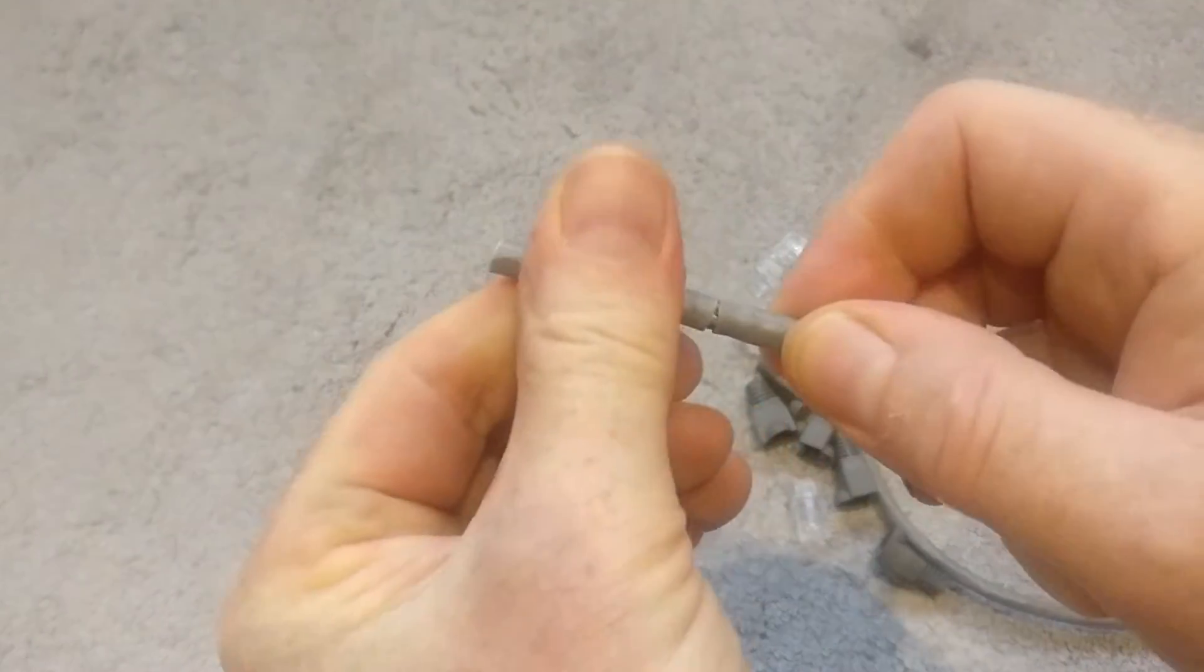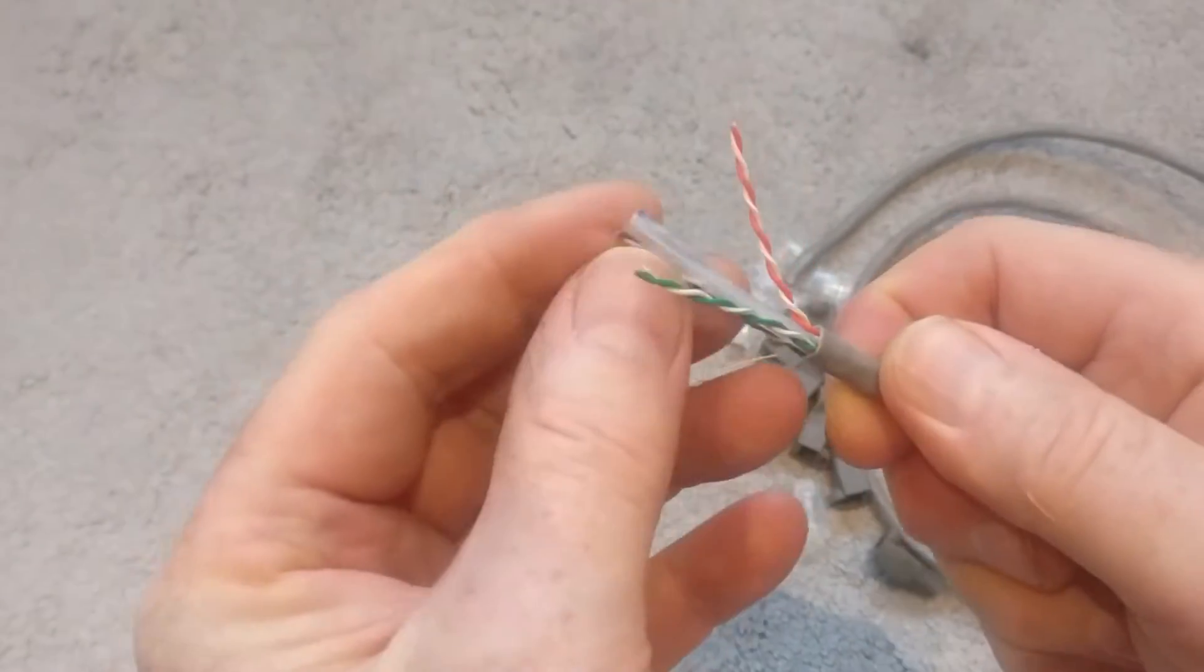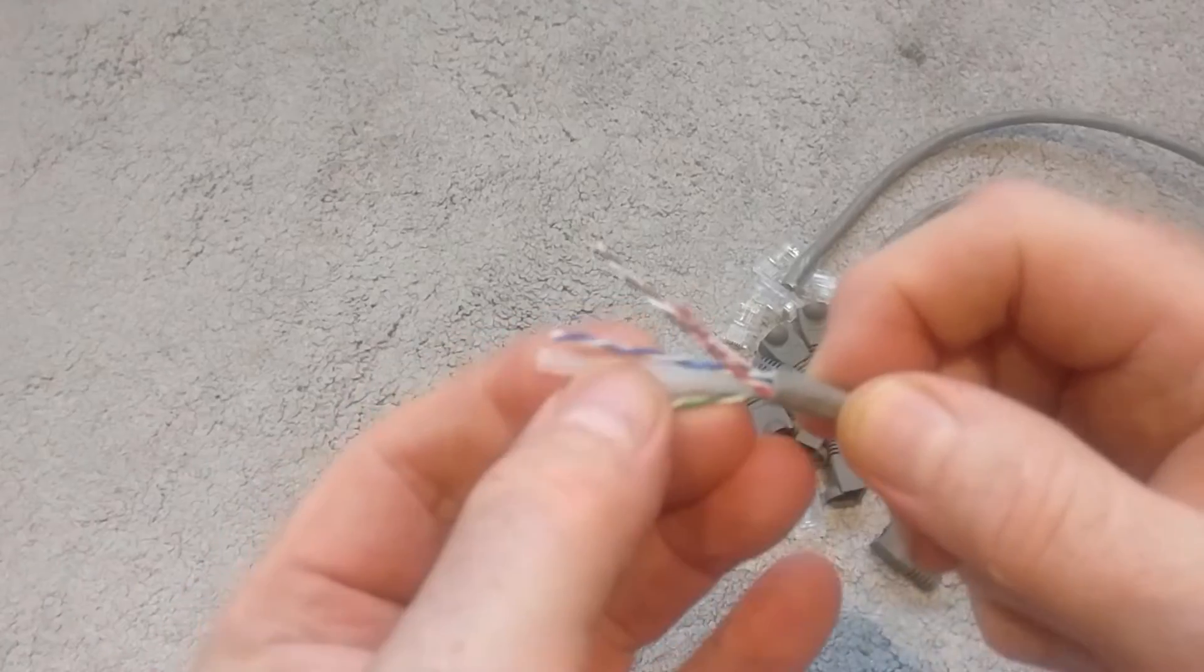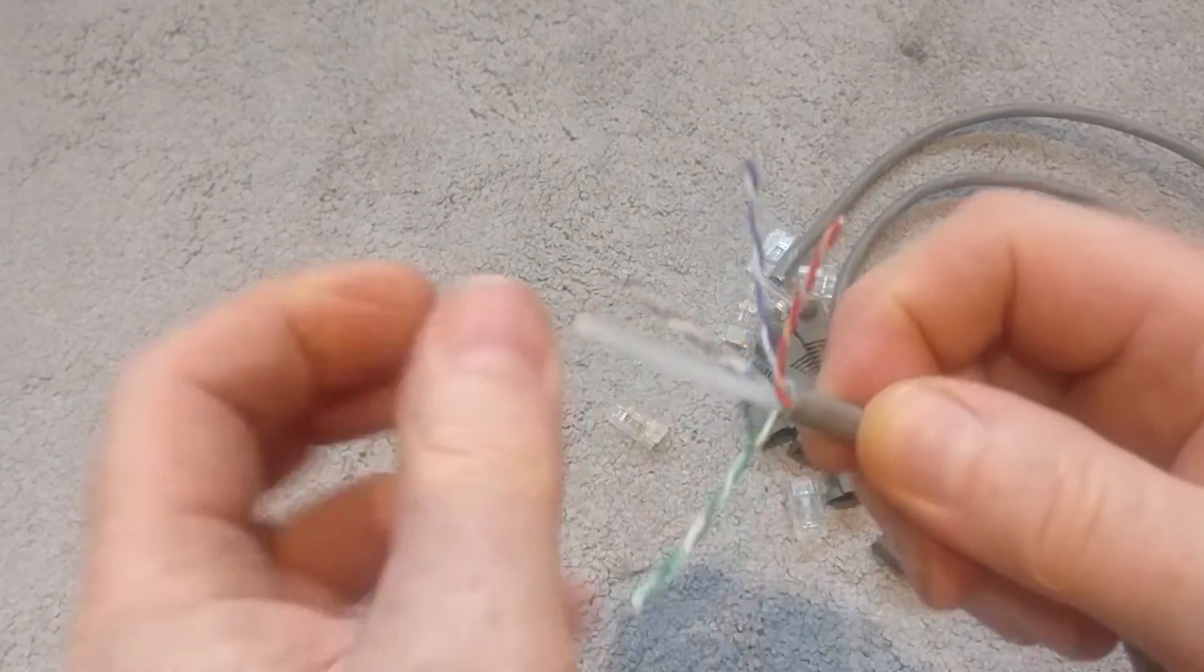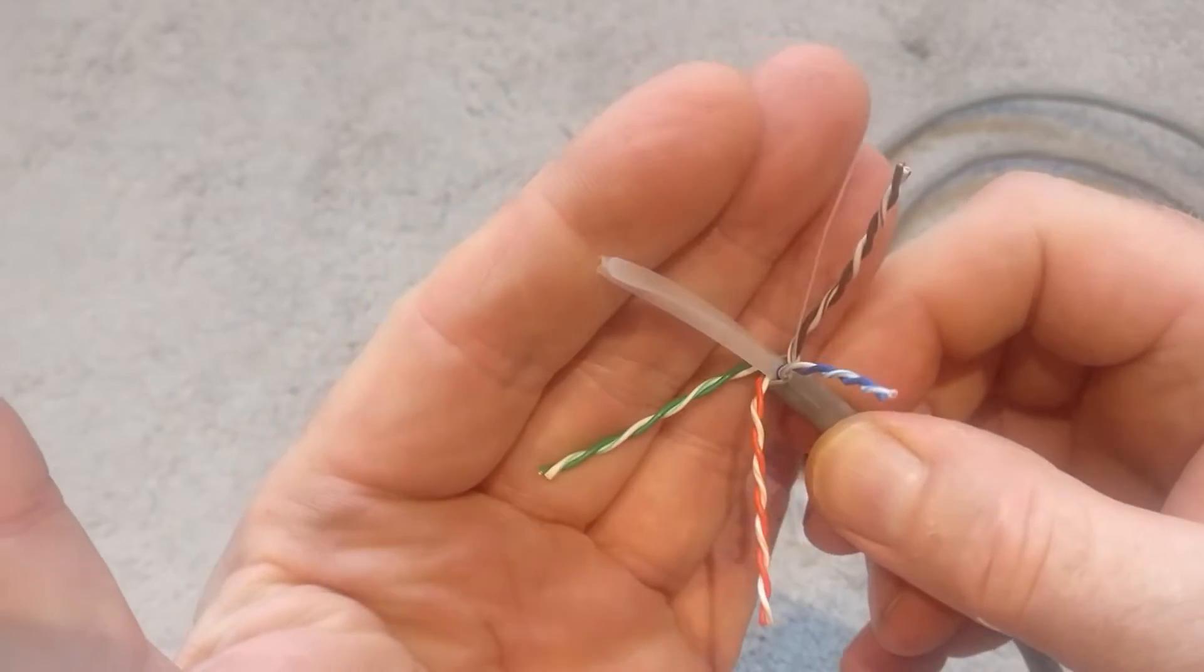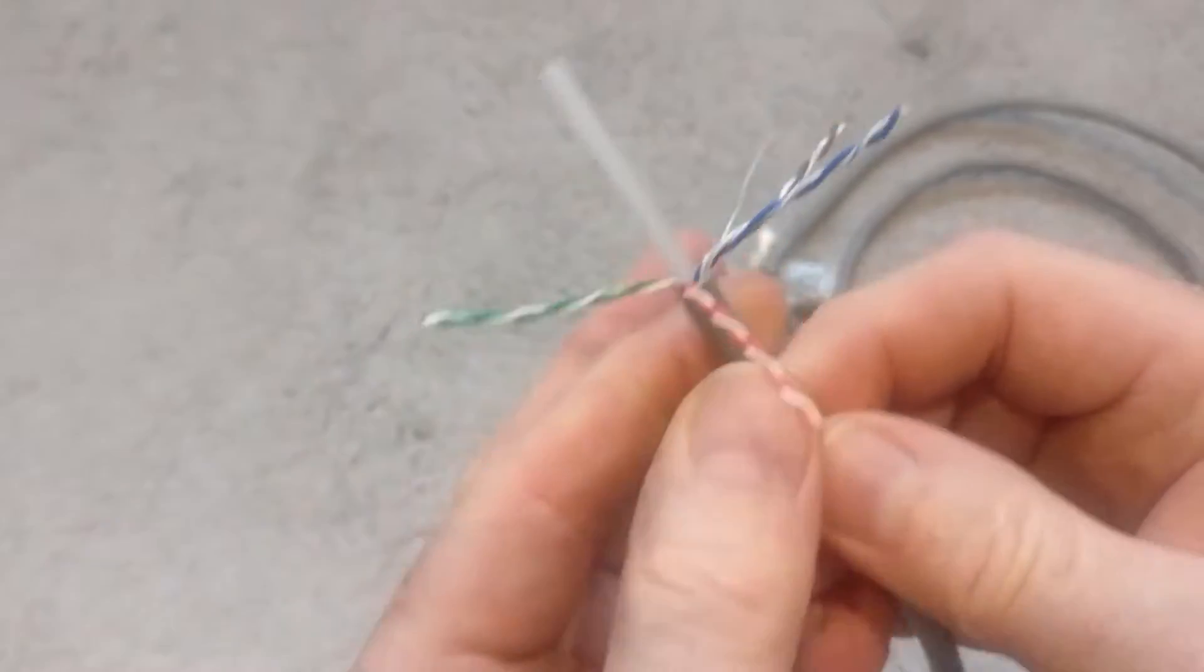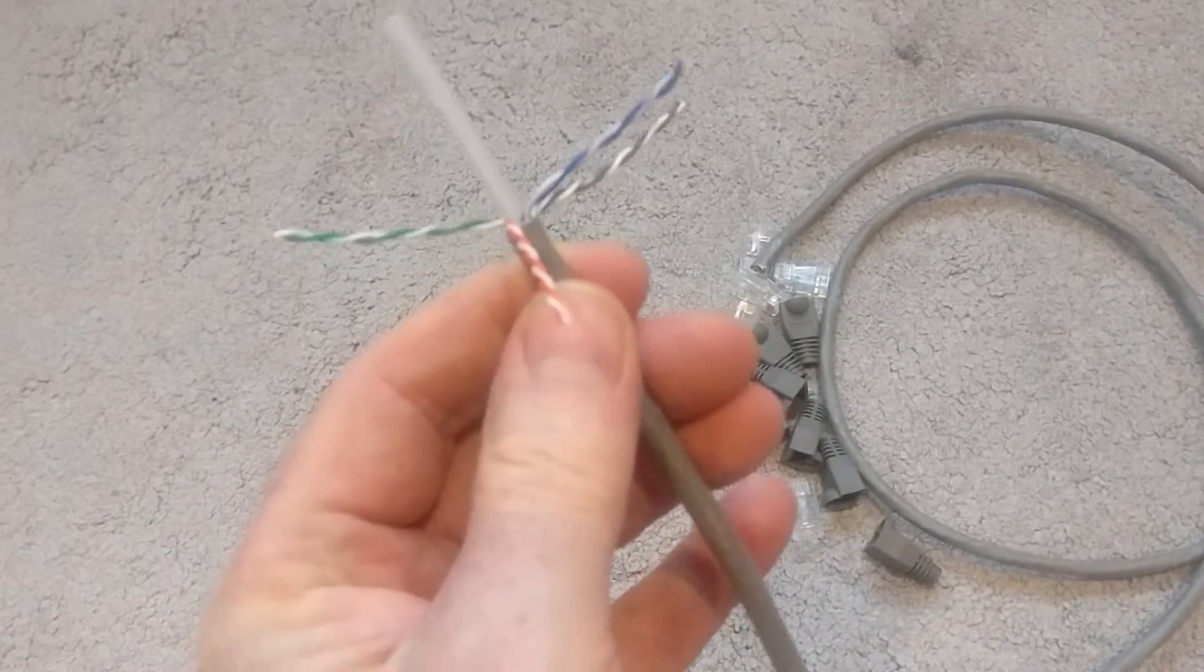So here you can see four pairs of cables. Just pull those out of the way for now. First thing you want to do is get rid of the plastic carrier, so this just helps keep the four pairs separate when they're in the cable. We don't need that, so get yourself a pair of wire cutters and just crimp that off to the base, being careful not to touch the cables.